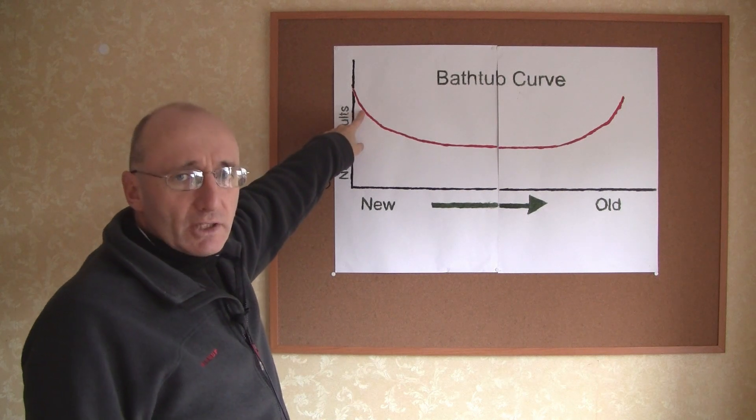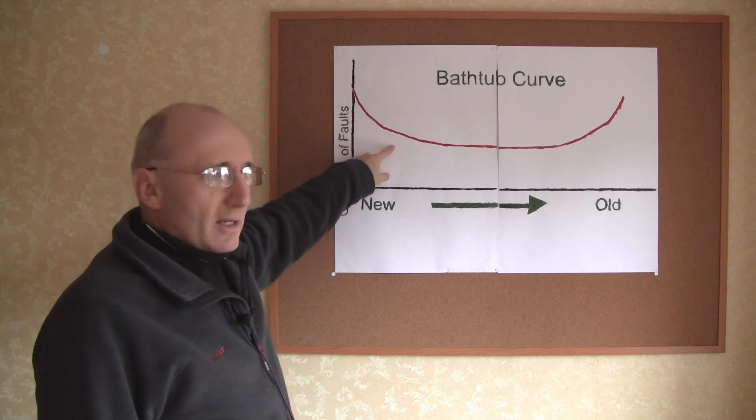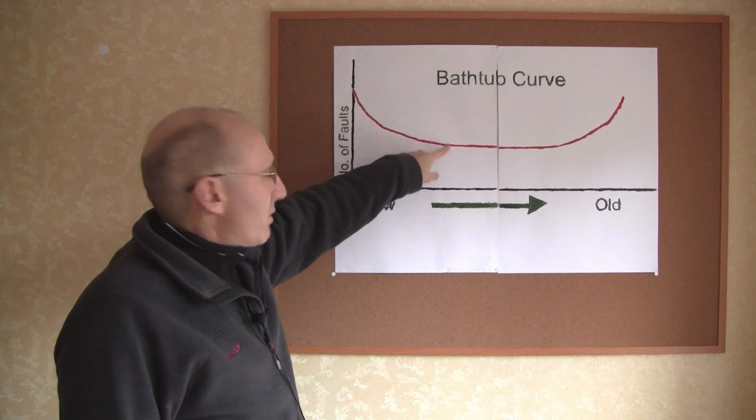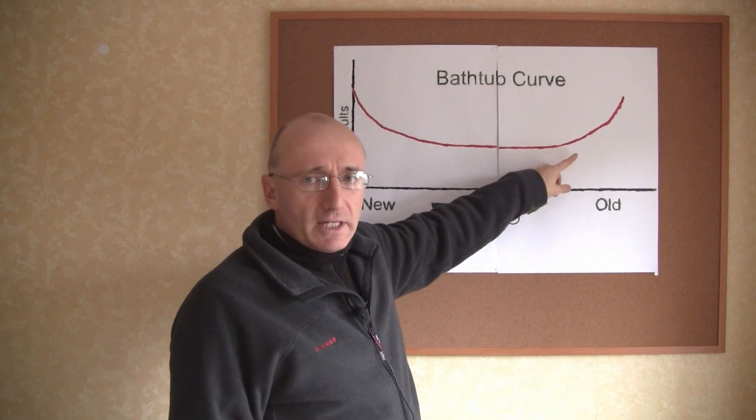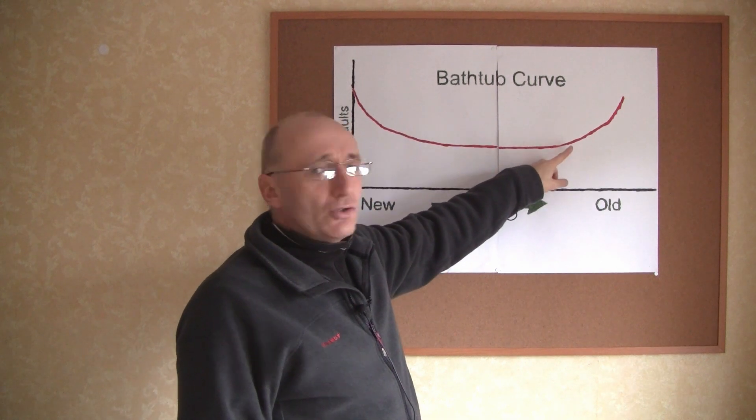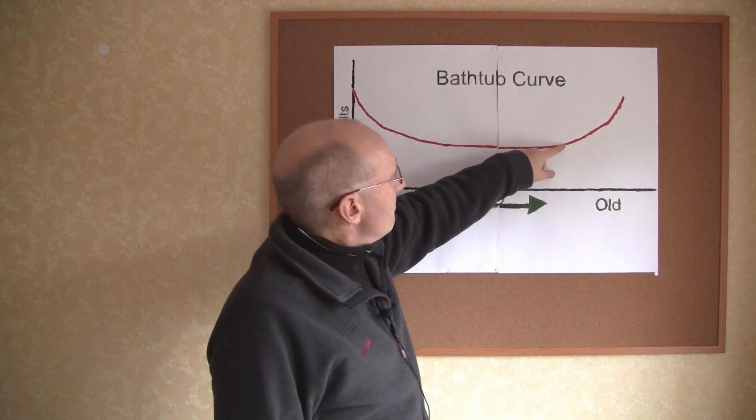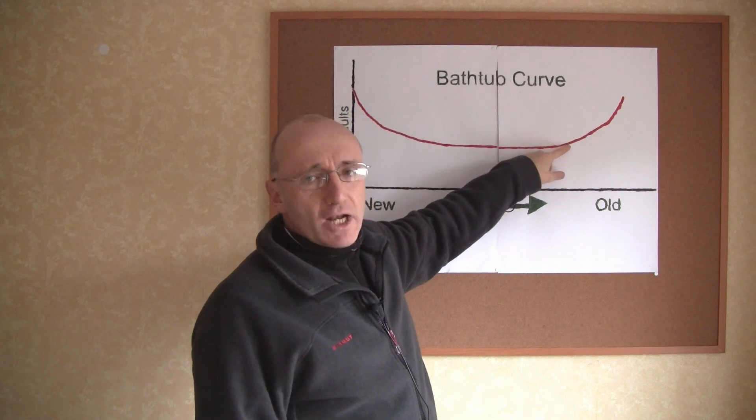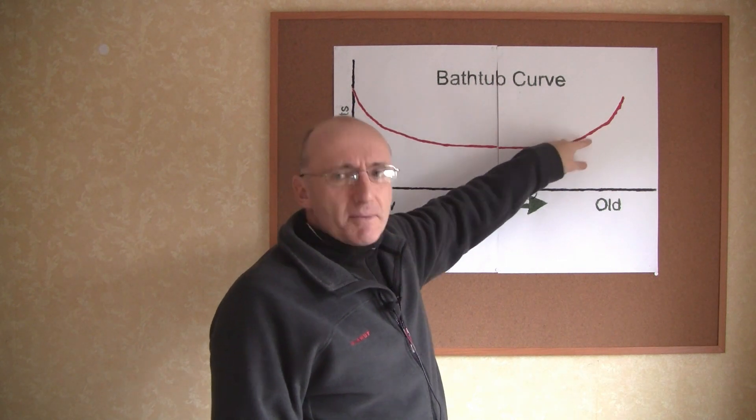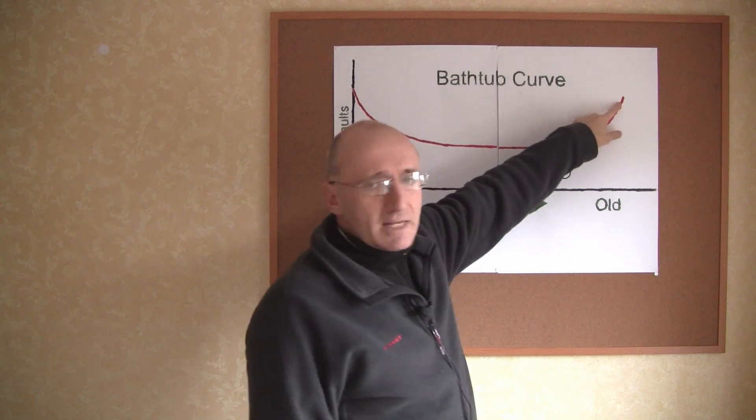But once these faults have been resolved at the beginning, they settle down and you get a fault now and again, but not too many. And then when the washing machines reach the end of their useful life, they become less reliable. If you've got a washing machine that's quite old and you're getting lots of problems, that means it's time to buy a new one because it's got to the end of its useful life.